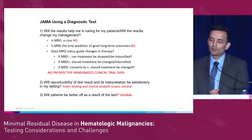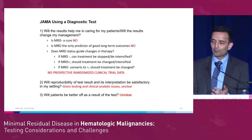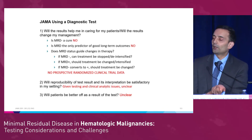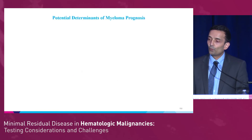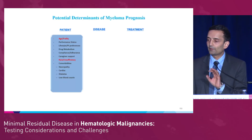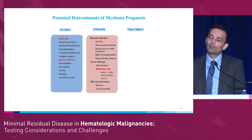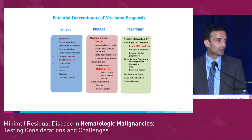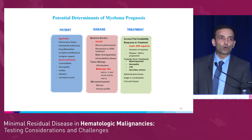The second question is: will reproducibility of the test and its interpretation be satisfactory in my setting? You heard a lot about sensitivity, specificity, analytic issues, and heterogeneous marrow sampling — not clear. Will patients be better off as a result of the test? In 2019, we don't have a clear answer. What are the other potential determinants of myeloma outcome? Not just MRD, but age and frailty, renal insufficiency, burden of disease by international staging, LDH, and molecular risk. To just focus in on MRD makes this seem very simple — and it's much more complicated than that.